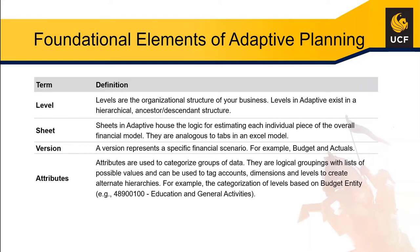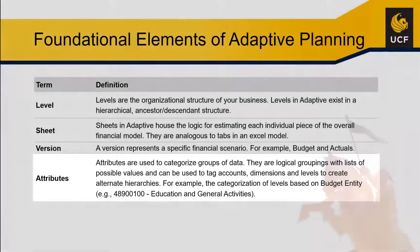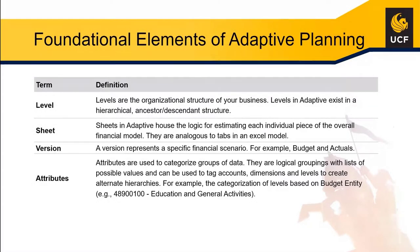The last item is attributes. You'll hear people refer to things as either account attributes or level attributes. These represent the different chart fields that we currently have in PeopleSoft — things like fund code and budget entity. An attribute is something that is tied to a specific level or GL account, and it's used to highlight the different chart fields we have in the system.